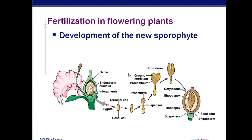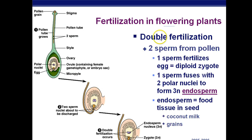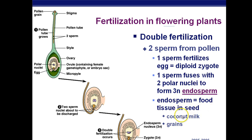Double fertilization — this is pretty important for Chapter 38. Double fertilization means two sperm come from the pollen. The gametophyte makes the gametes — two sperm. One sperm fertilizes the egg and forms a diploid zygote. The other sperm, however, fuses with two polar nuclei to form a triploid, 3n endosperm. This endosperm is food tissue in the seed — this is like coconut milk, the starchy stuff inside corn, the stuff inside beans. All that is endosperm.